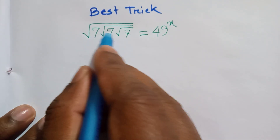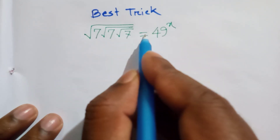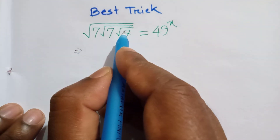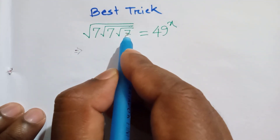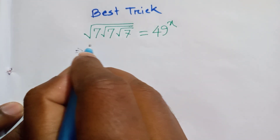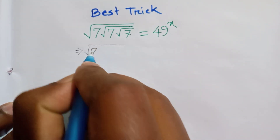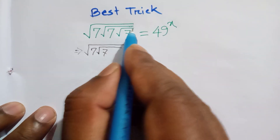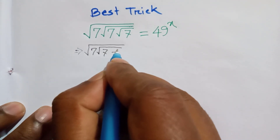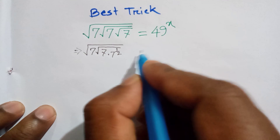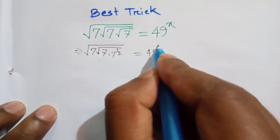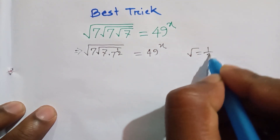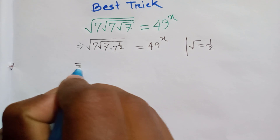We have: under square root of seven, under square root of seven, under square root of seven, is equal to 49 to the power x. Firstly we break this small root, so it can be written as under square root of seven times under square root of seven. This root can be written as seven to the power one by two, is equal to 49 to the power x. We know this root is equal to one by two.